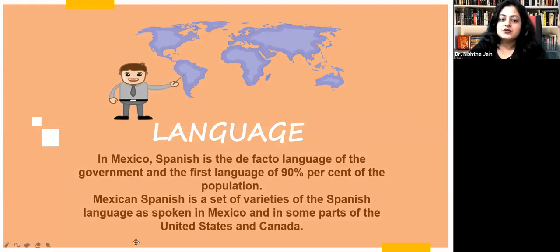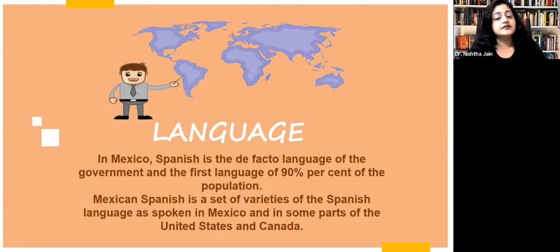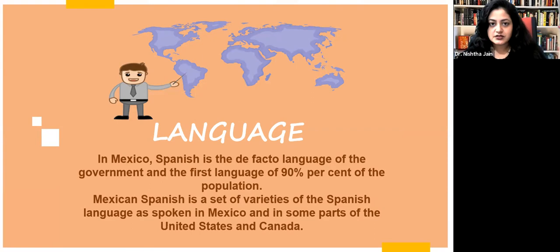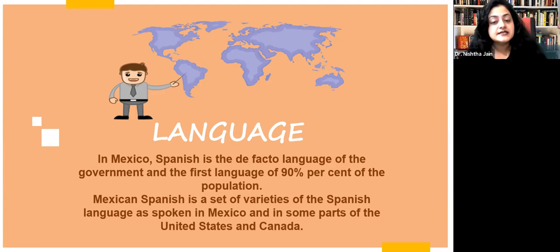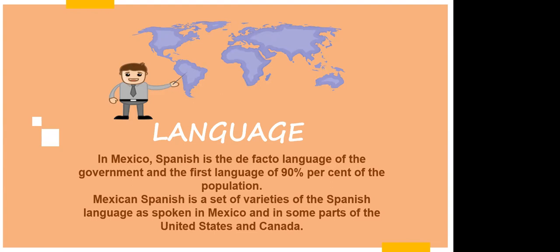In Mexico, Spanish is the de facto language of the government — meaning it is not officially recognized by law but is informally used. It is the first language of 90 percent of the population. Mexican Spanish is a set of varieties of the Spanish language as spoken in Mexico and in some parts of the United States and Canada.